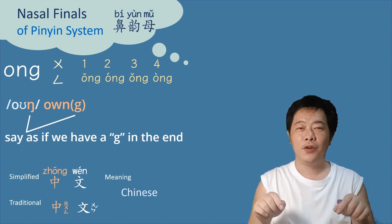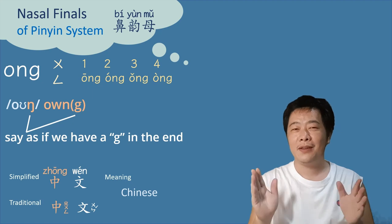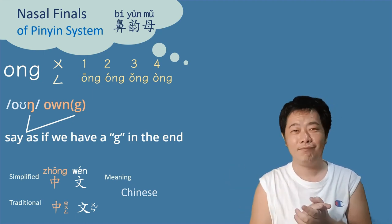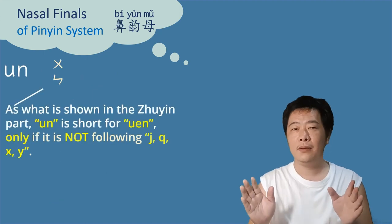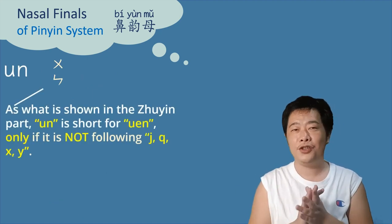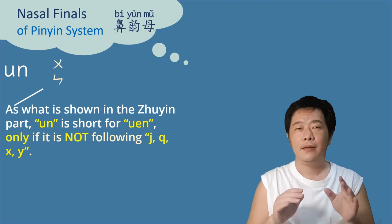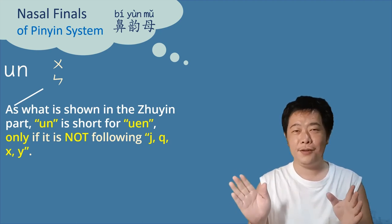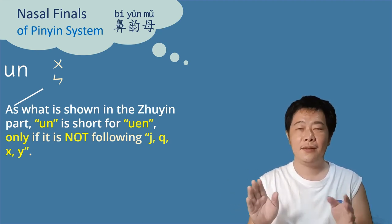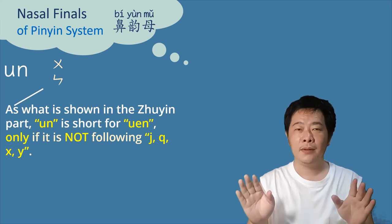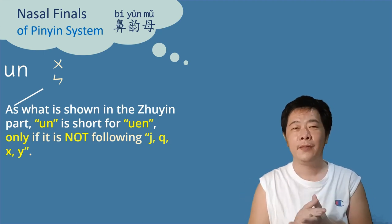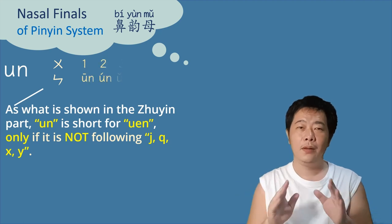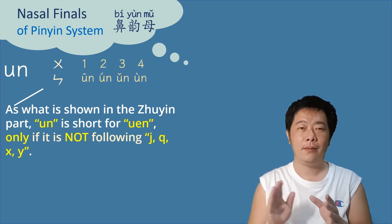乌恩 (un) has two pronunciations in the pinyin system. If it's not following J, Q, X, or Y, it says 'ūn' — wūn, wún, wǔn, wùn. For more information about the consonants, check the description of the video.